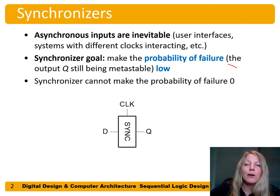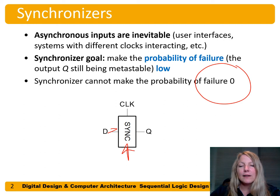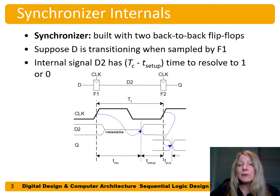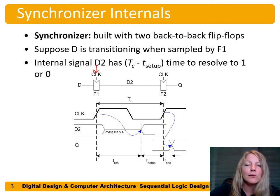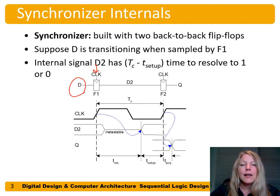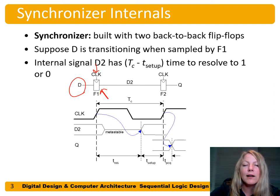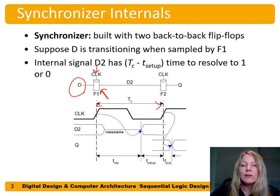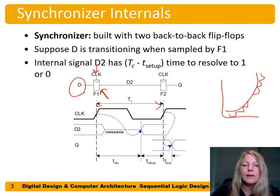A synchronizer can never make the probability of failure zero. Here's our D, and we have some synchronizer here, and then our output Q that we're sending into the system. A synchronizer is built with two back-to-back flip-flops. The first one is the sampling flip-flop, which samples this metastable or asynchronous input D. Now we allow it to regenerate using the feedback from the flip-flop — regenerate for TC minus T_setup between those two flip-flops — moving up to the rail or moving down to the rail during that cycle time minus the setup time.